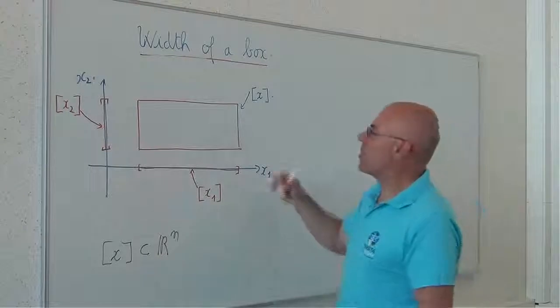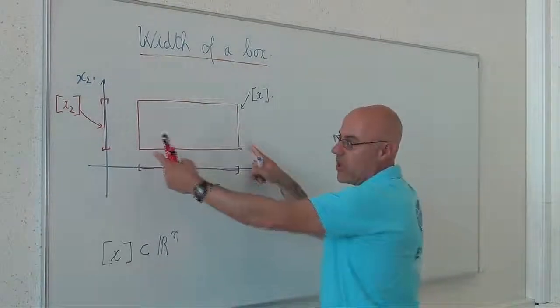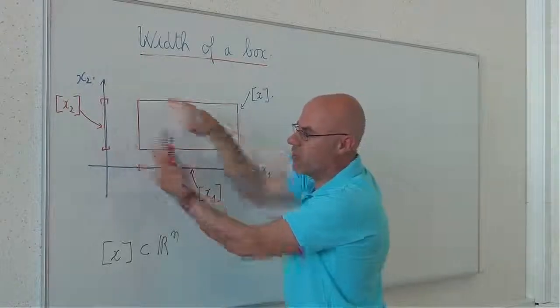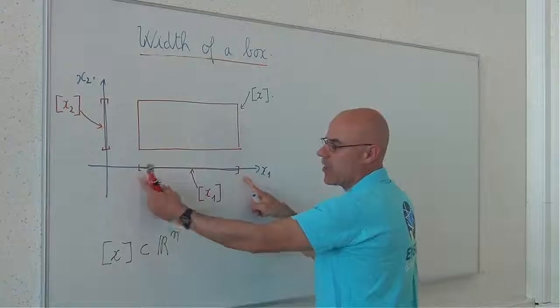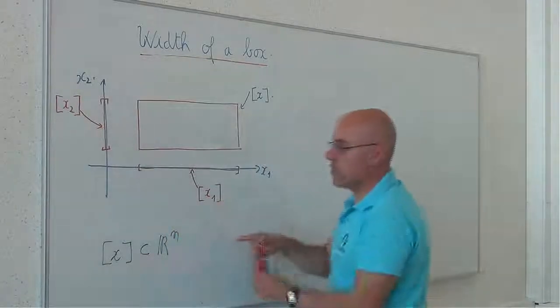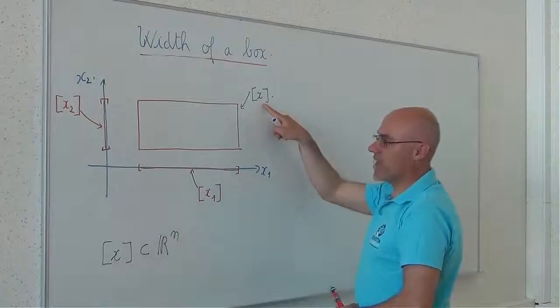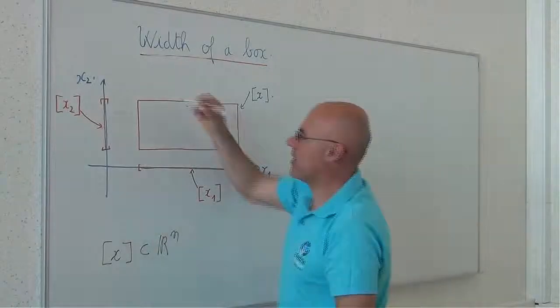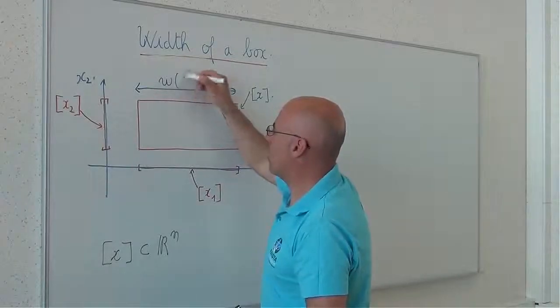The width of a box corresponds to the size or to the width of the largest interval component. So this box has two interval components, X1 and X2. The largest one is X1, so the width of X corresponds to the width of X1. This is the width of X.